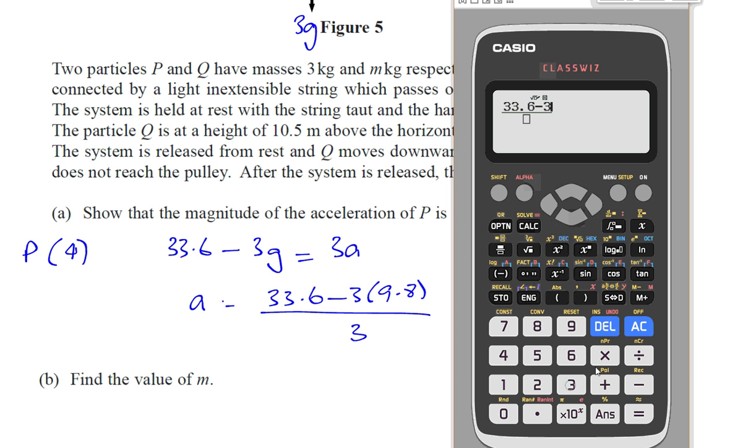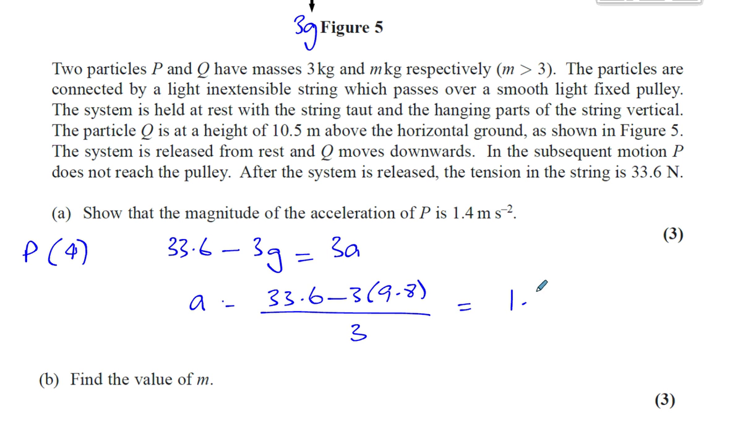33.6 minus 3 times 9.8, divided by 3, which is 7 over 5, which is 1.4. That's 1.4 meters per second squared, as required in the question.